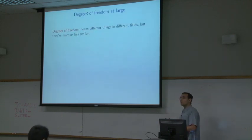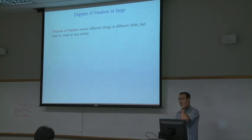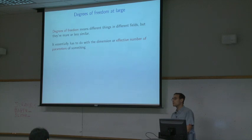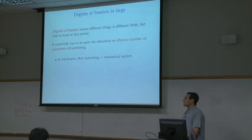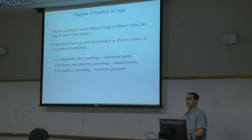So, degrees of freedom — what does it mean? You've probably heard that word a lot of times. It means different things in different fields. It's not only a topic in statistics and machine learning, but kind of across fields. I think there's a core concept underneath this idea: it has to do with measuring the dimension or the effective number of parameters of something. In mechanics, that's a mechanical system. In physics and chemistry, that's a physical system. In statistics, that's an estimation procedure.